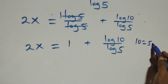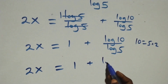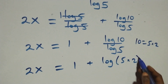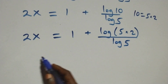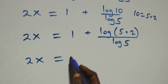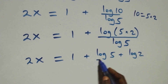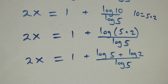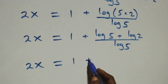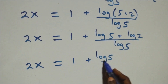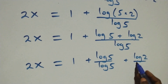Now 10 can be written as 5 times 2. Applying the product rule of logarithm again, we separate log 10 over log 5 into two fractions: 2x equals 1 plus log 5 over log 5, plus log 2 over log 5.